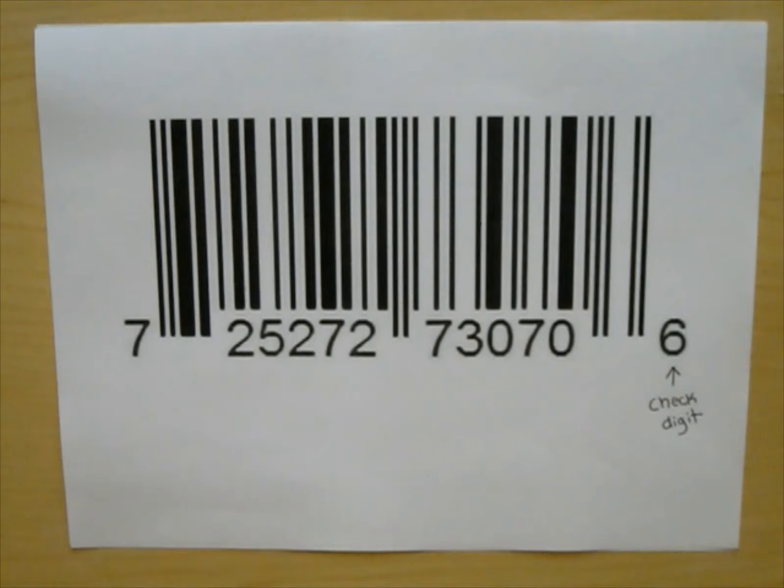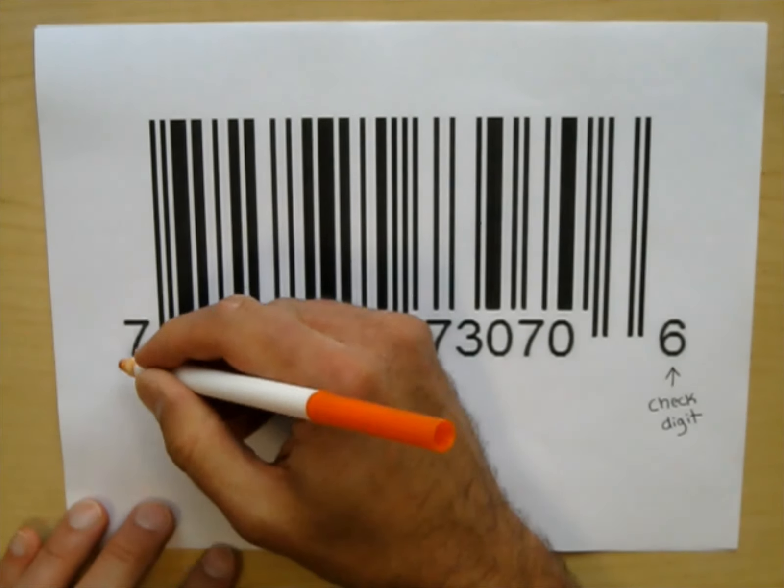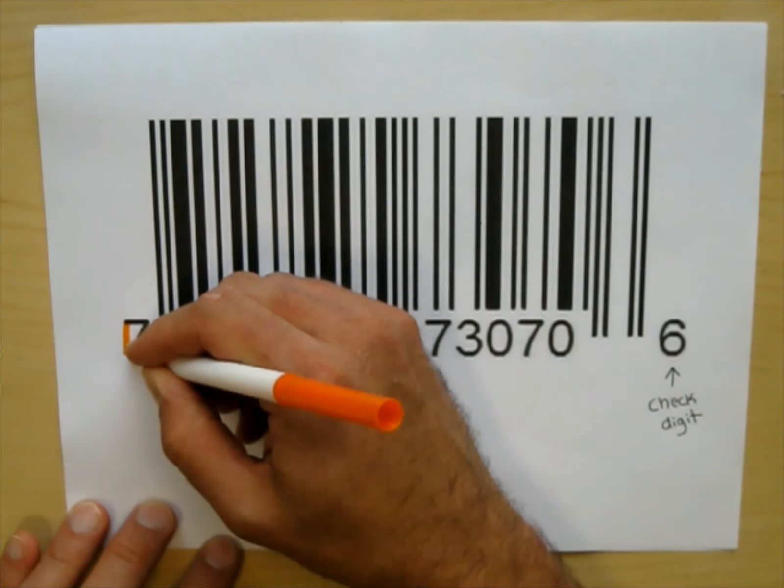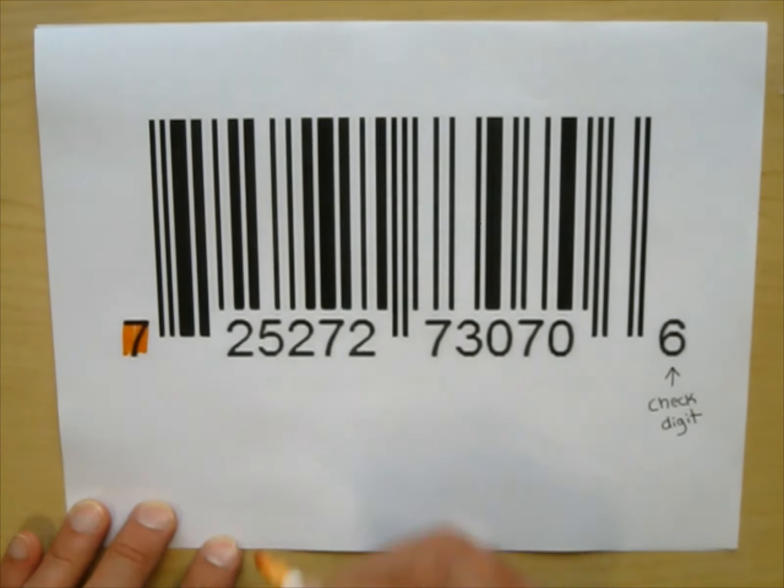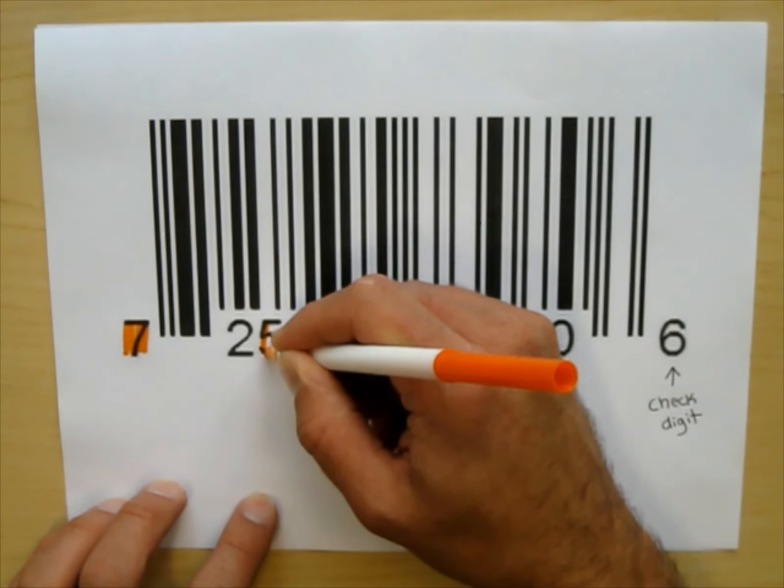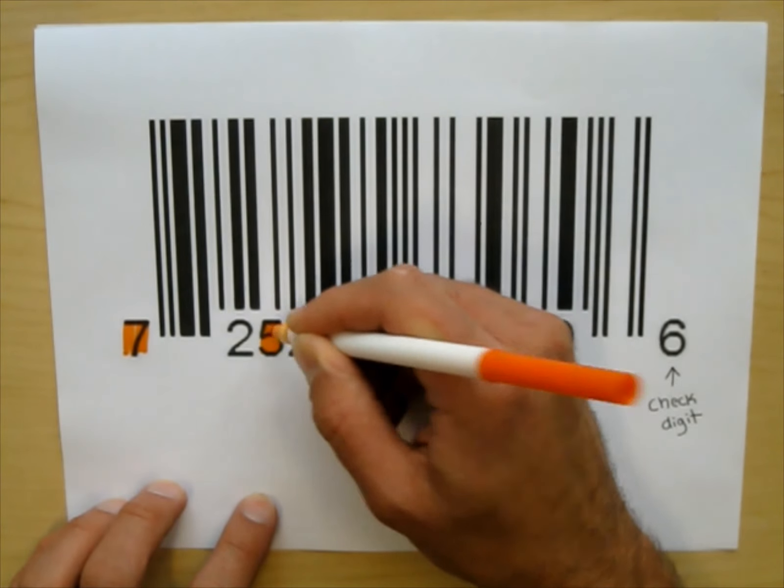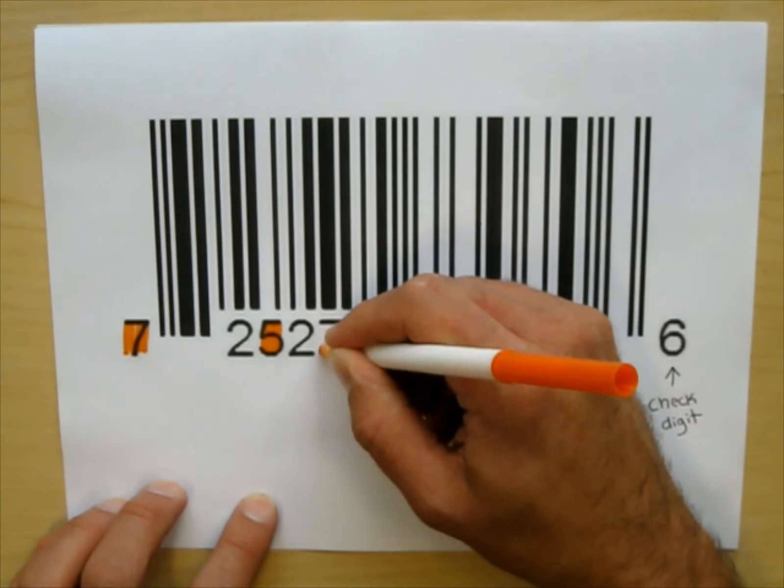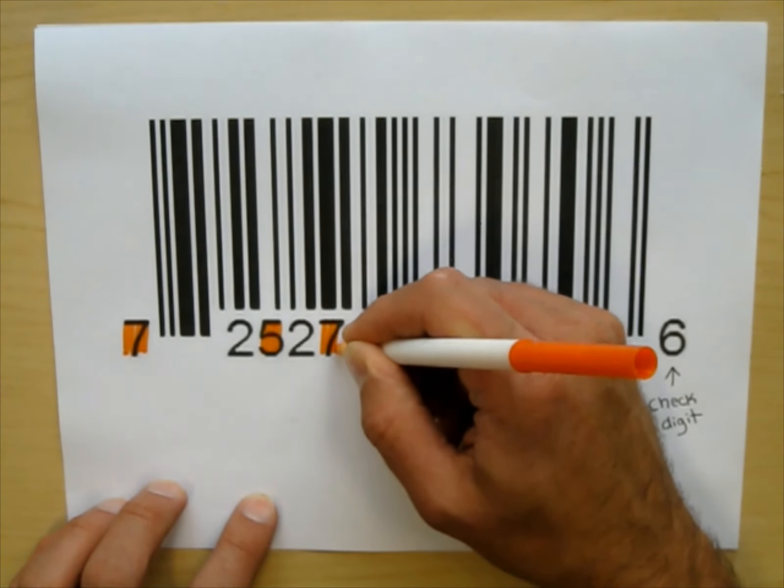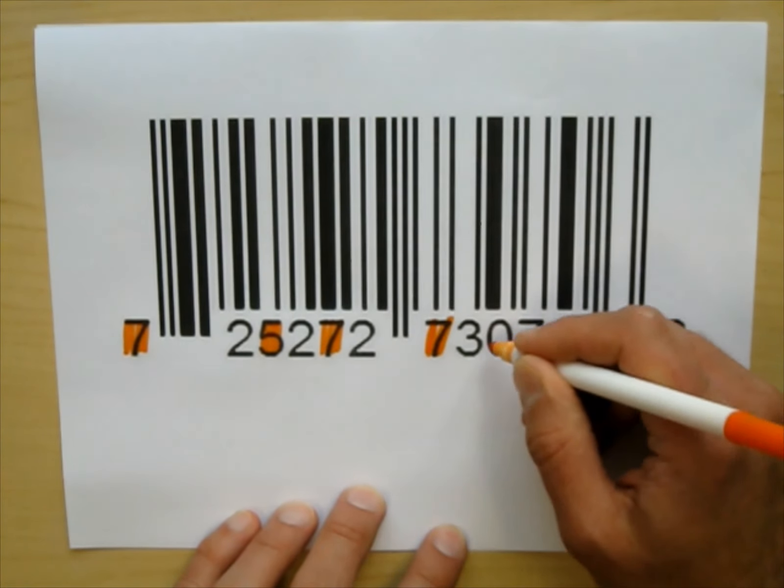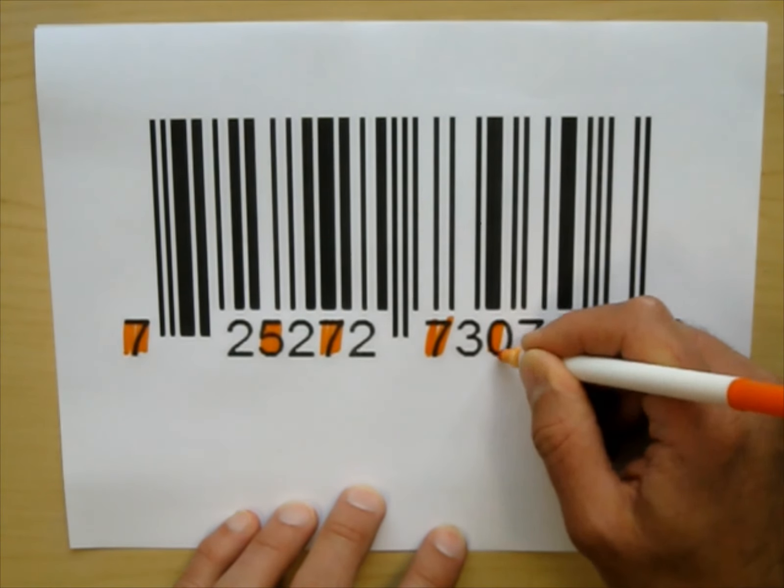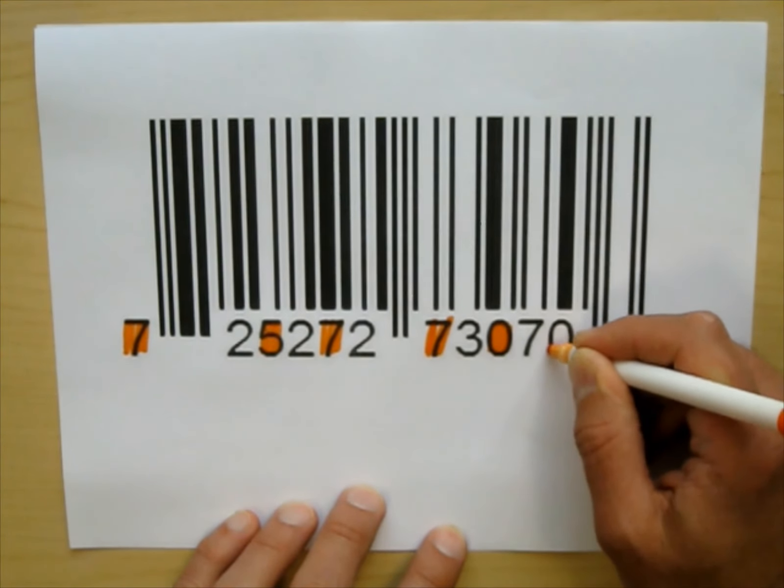You take the first number, which is 7. I'm going to highlight it in orange. And then you take every other number. So we have the 5, we have the 7, then another 7, a 0, and a 0.